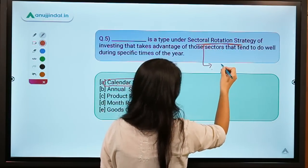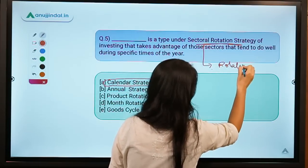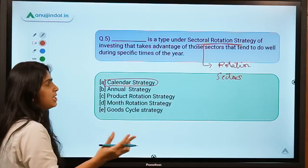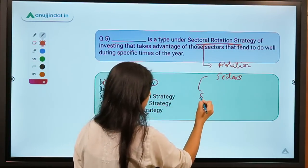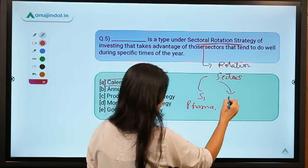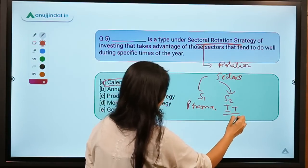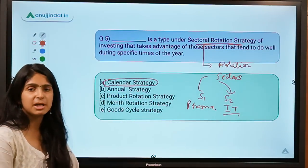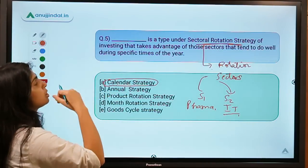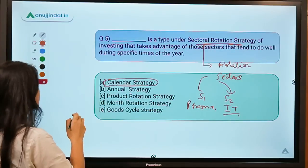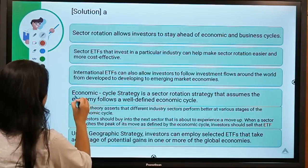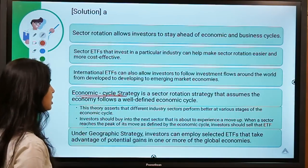First, let's understand sectoral rotation strategy. As the name suggests, rotation is done among sectors — money is not fixed in one sector. If money is invested in pharma today, it might move to IT tomorrow. Moving money into the most profitable sectors rather than fixing it in one sector is known as sectoral rotation strategy.